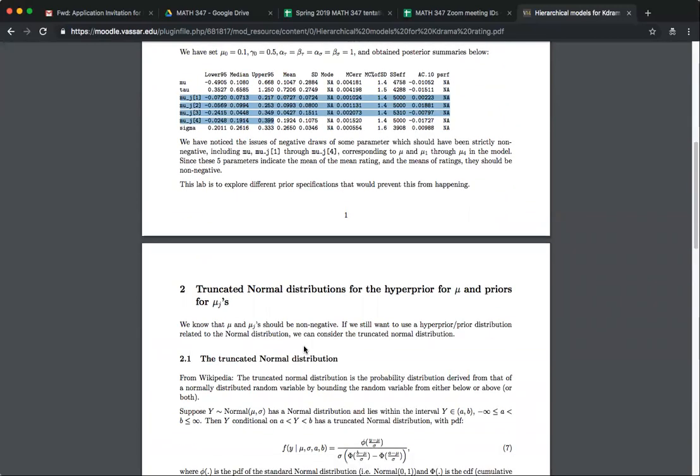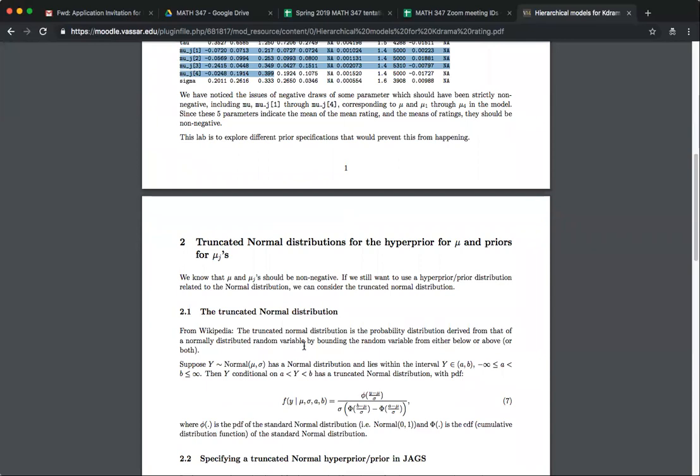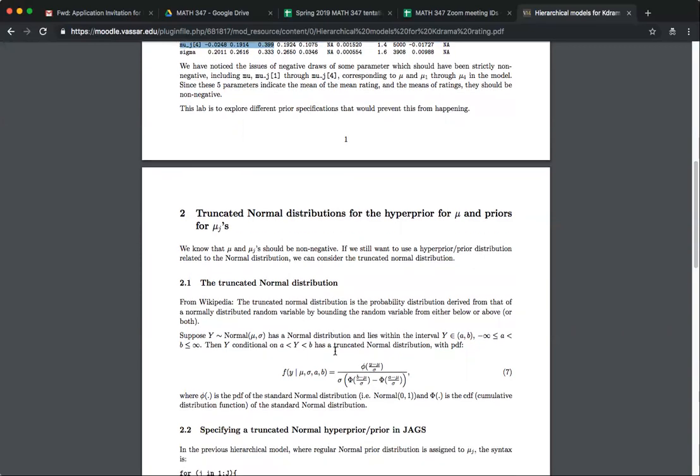So two ways that I propose that you can try and I give you a simple code to do that. The first one, which is in section two, is the truncated normal distribution for the hyper prior mu and priors. So truncated normal, it's like a regular normal distribution, but you restrict the range of the random variable. And for our case, we want to do a truncated normal that is non-negative.